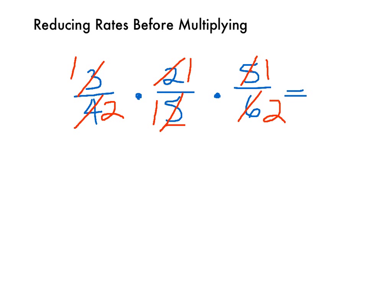We have just reduced our fraction prior to multiplying and it left us with a very easy multiplication problem. So multiplying across the numerators 1 times 1 times 1 is 1 and the denominators 2 times 1 times 2 is 4.